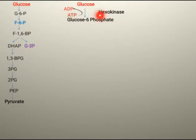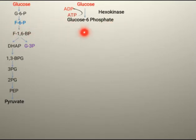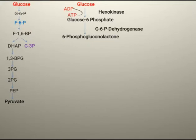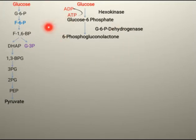This step — glucose to glucose 6-phosphate — is shared with glycolysis. But now, glucose 6-phosphate is acted upon by a specific enzyme called glucose 6-phosphate dehydrogenase. This dehydrogenase enzyme removes hydrogen from glucose 6-phosphate, converting it into 6-phosphogluconolactone.